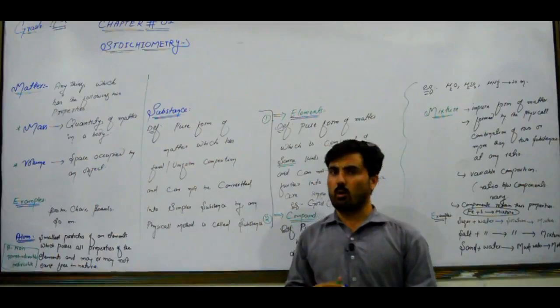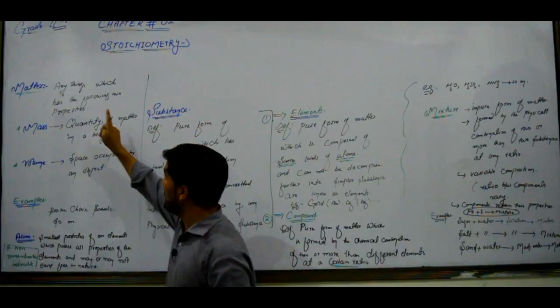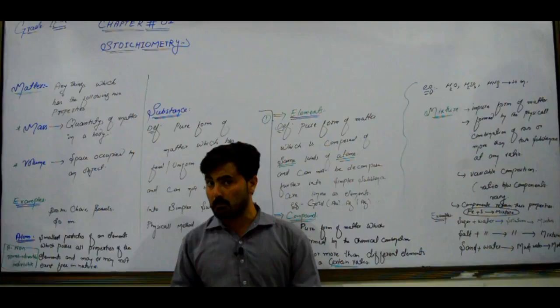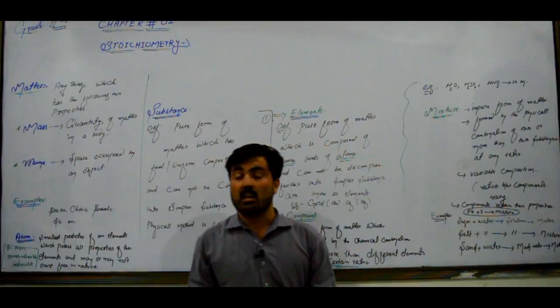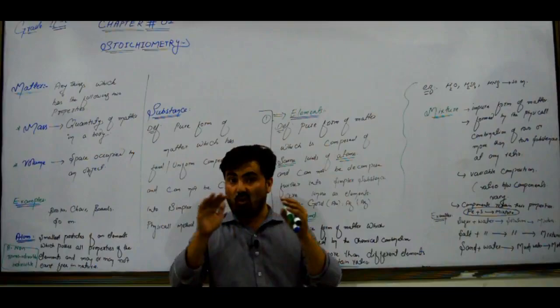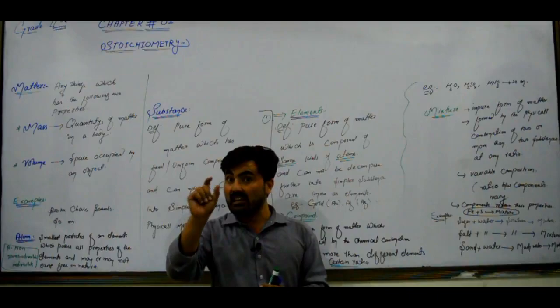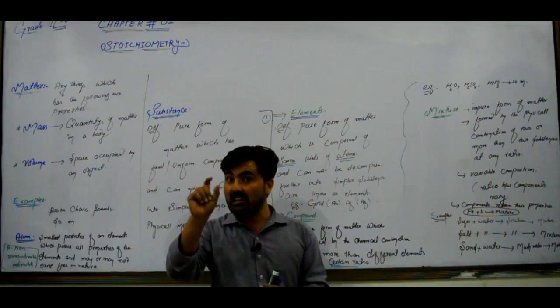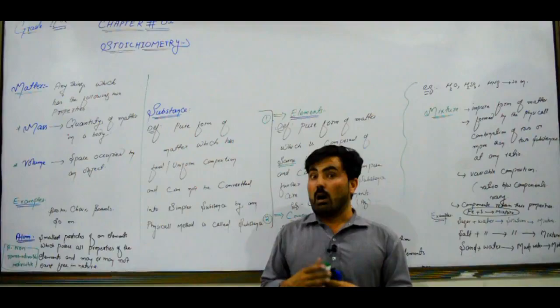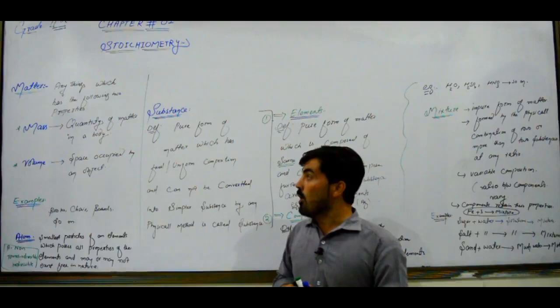First basic concept: matter. The definition of matter is anything which possesses the following two properties — mass and volume. Mass means the amount of matter in a body. Volume is the space occupied by an object. Any body that has both mass and volume is called matter. Examples of matter include a book, chair, board, and so on.